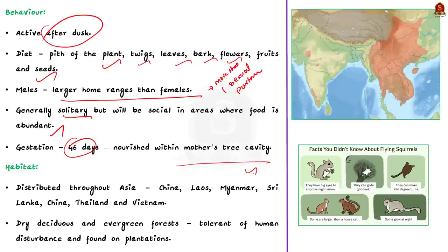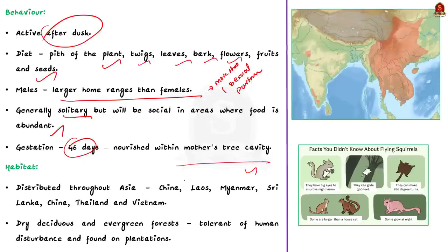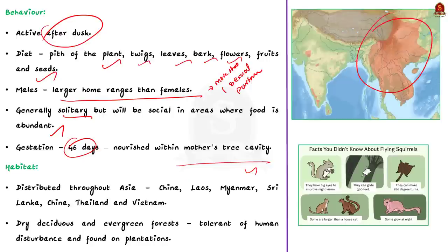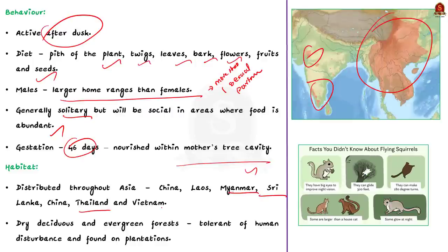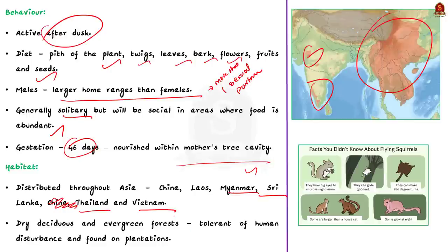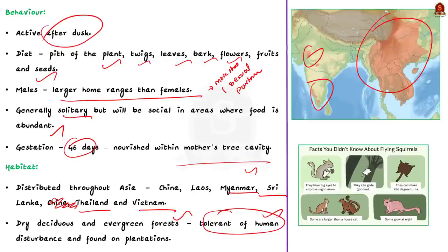Although named the Indian giant flying squirrel, this species is found throughout Asia. They are found in China, Laos, Myanmar, Sri Lanka, Thailand and Vietnam. They can be found in dry, deciduous and evergreen forests. These species have adapted to changes brought by humans, so they are found even in plantations.